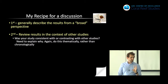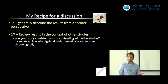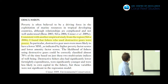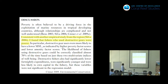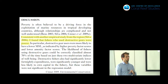The second part of the recipe: review your results in the context of other studies. What have other people found? Was your study consistent with or contrasting with other studies? You need to explain why. I always suggest doing this thematically rather than chronologically or paper by paper — 'so-and-so did this, but then so-and-so found that' is a terrible way to do it. Think about doing it thematically. For example: 'Consistent with another empirical study from the region, I found that fishers using destructive gears were poorer.'